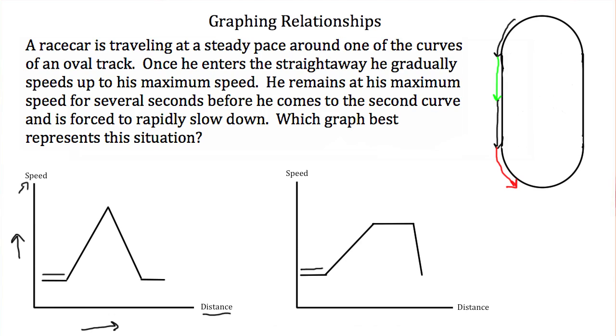Then on the next part, he speeds up. So his speed is increasing as he travels around the course. Since his distance and speed is increasing, you end up with an upward sloped line, like so.